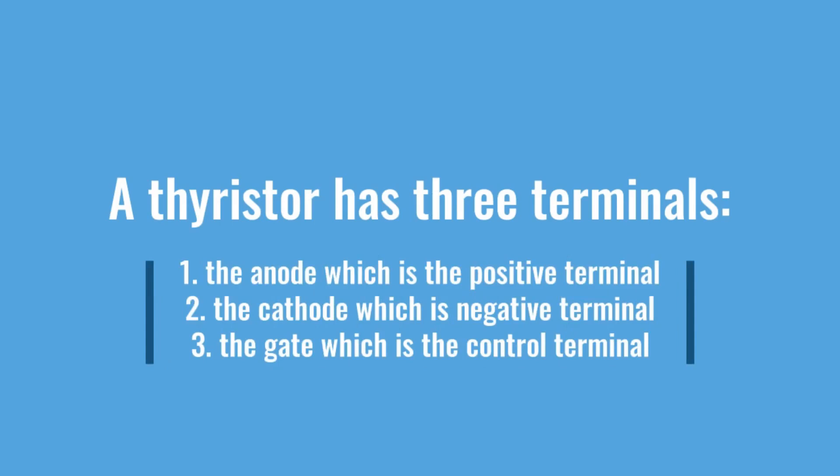We should also remember that a thyristor has three terminals: 1. The anode, which is the positive terminal. 2. The cathode, which is the negative terminal. 3. The gate, which is the control terminal. The gate controls the flow of current between the anode and cathode.